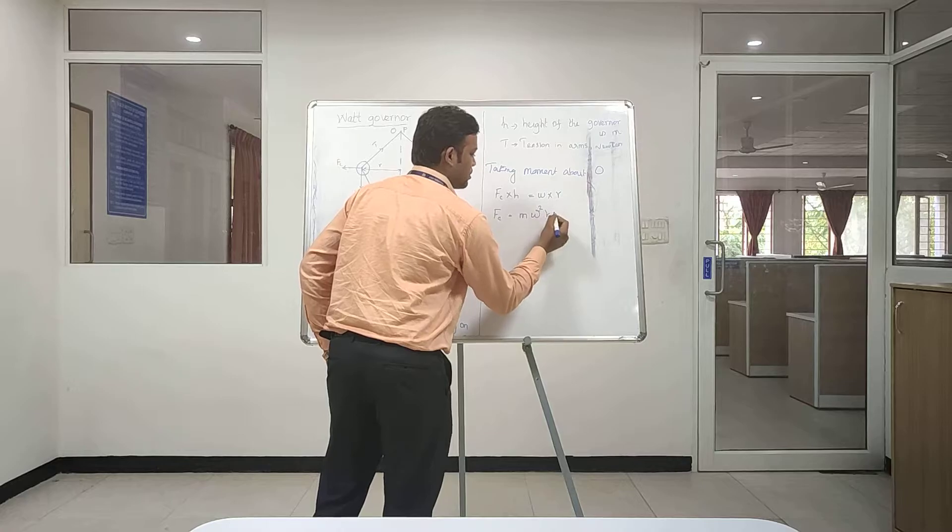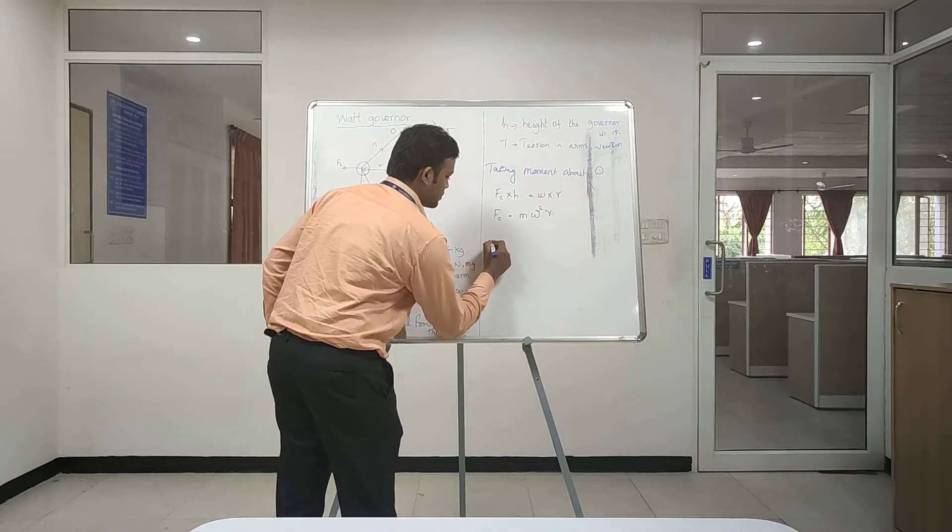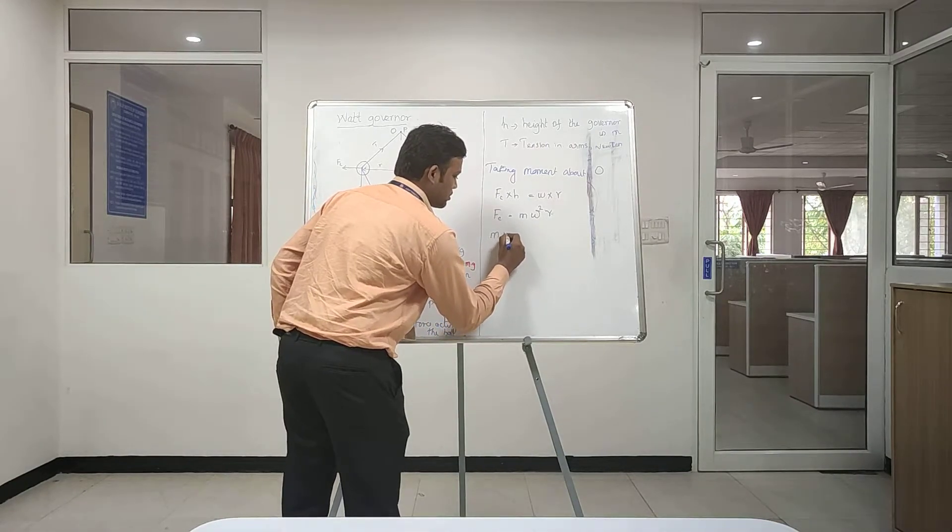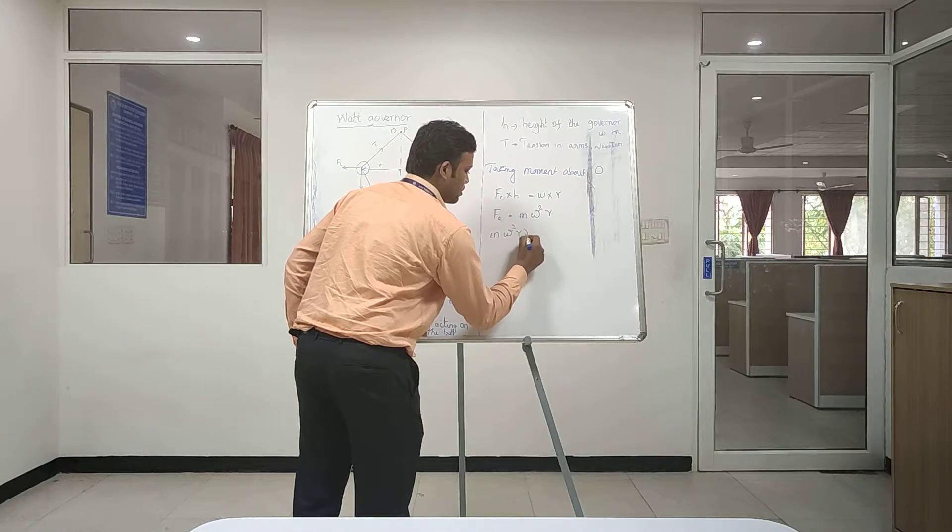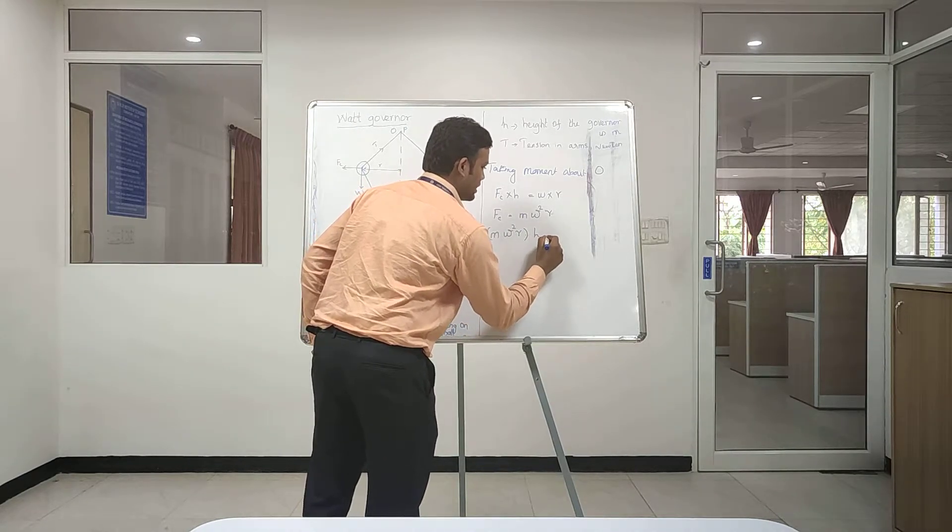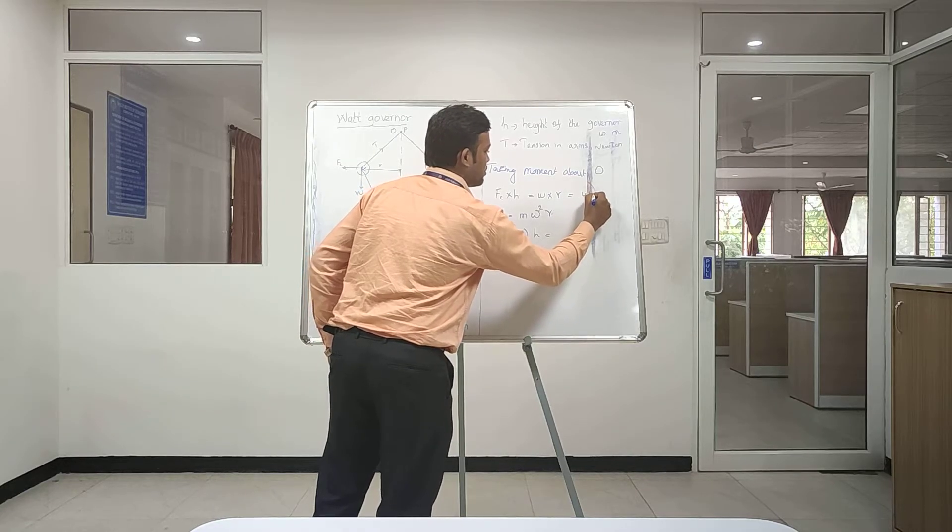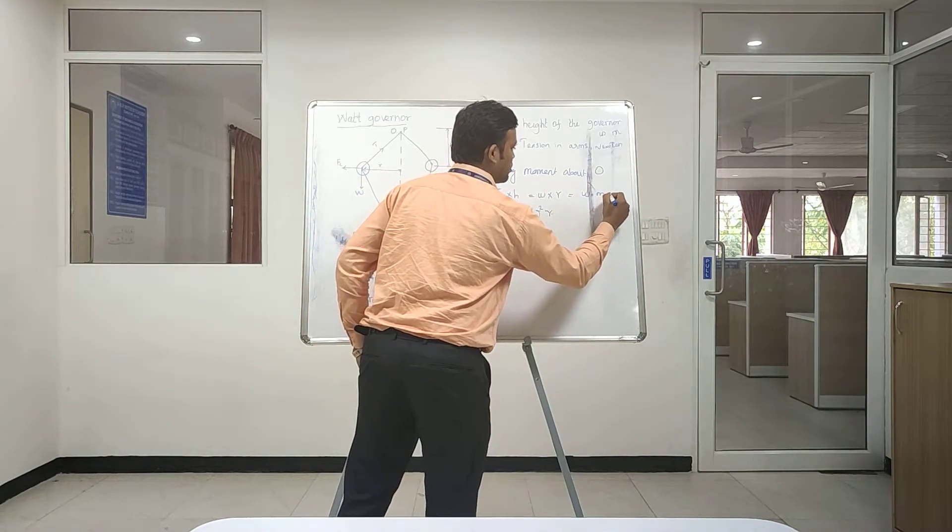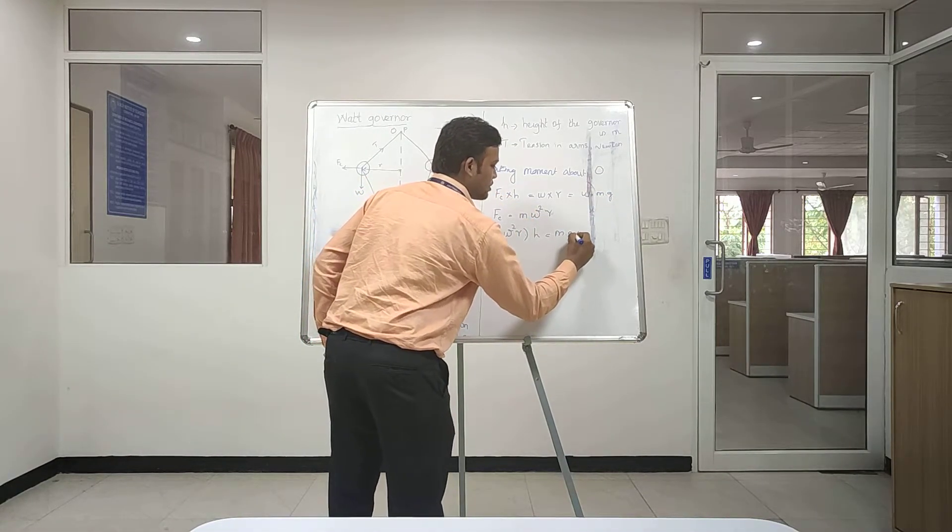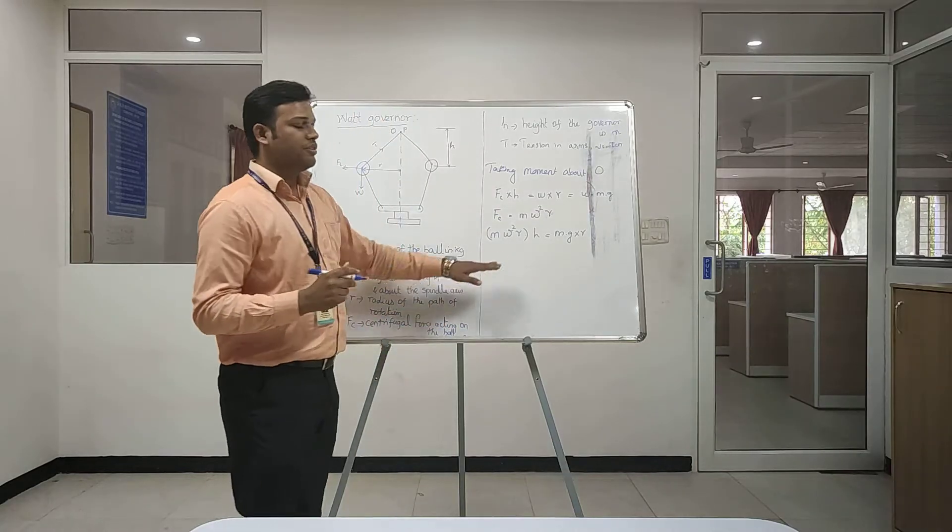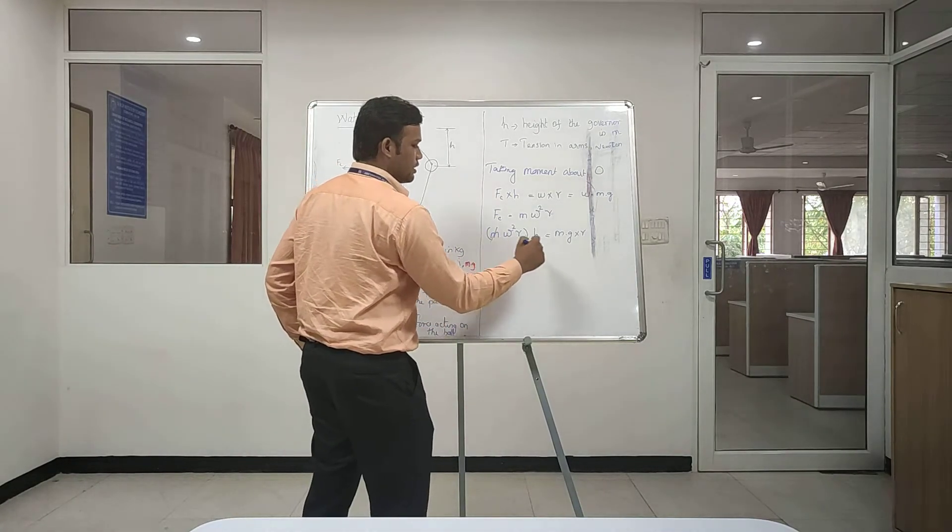Then this equation becomes m omega square r into h equal to, we know that W equal to m into g, m dot g into r.